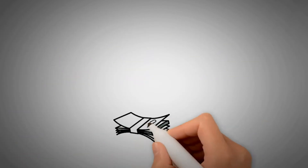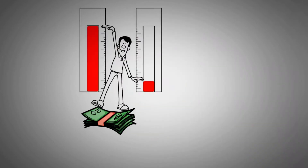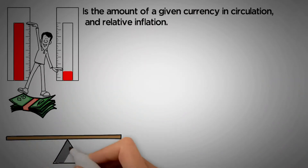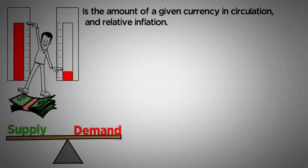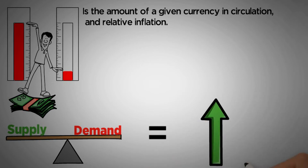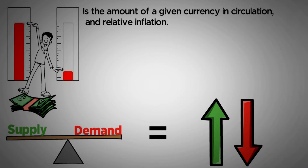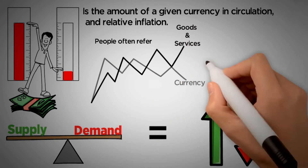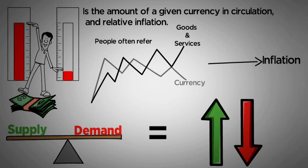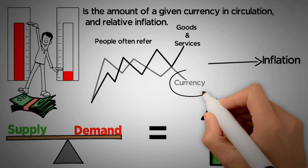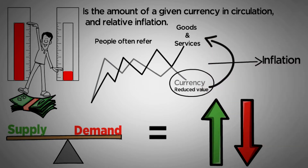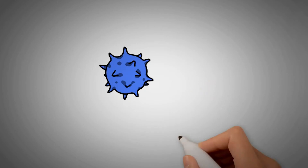The first factor that determines how a given currency's value goes up or down is the amount of a given currency in circulation and relative inflation. This is a fairly simple matter of supply and demand. Assuming demand for a currency remains the same, increasing the supply of the currency should decrease the currency's value. People often refer to both the increased price of goods and services and the reduced value of a currency as inflation — but technically the reduced value of the currency is what causes the price of goods to go up. Only one of those is inflation: one is the illness, the other a symptom.